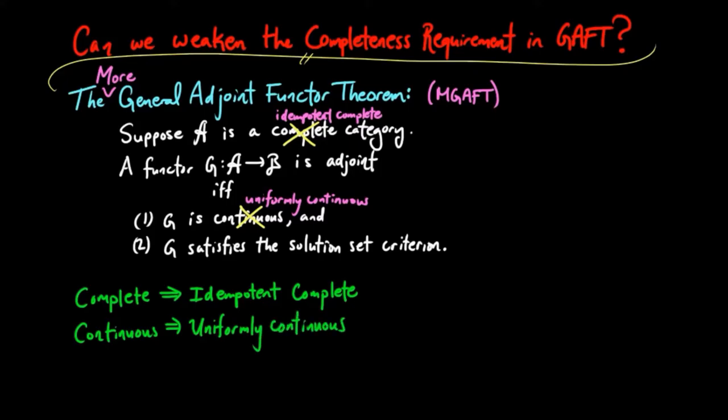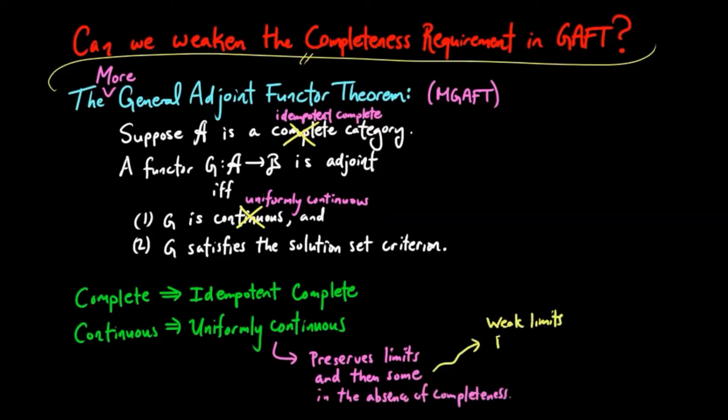But in general, a uniformly continuous functor preserves limits and then some in the absence of completeness of A. This then some are weak limits and pre-limits, which we will define subsequently.